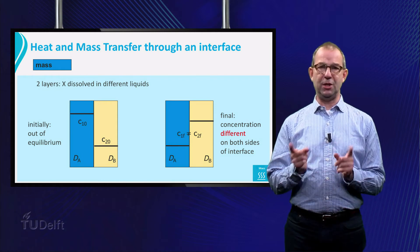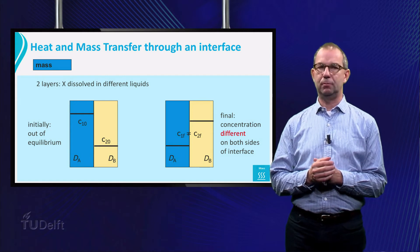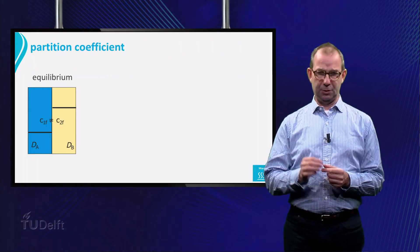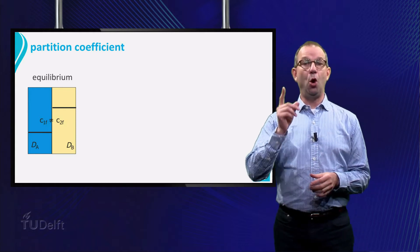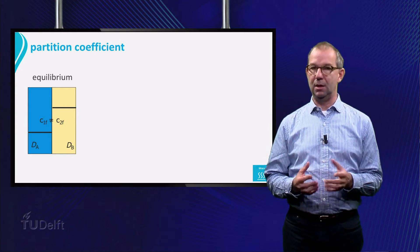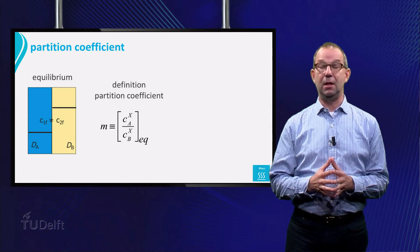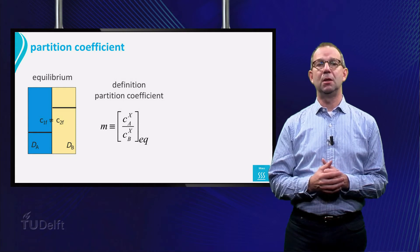Working with the concentration differences between location A and B is naive. What is true is that in equilibrium, the ratio of concentration is a given constant that only depends on the materials and on the temperature and pressure. This ratio has been introduced in the previous lecture and is called the partition coefficient. It can be found in tables and graphs.